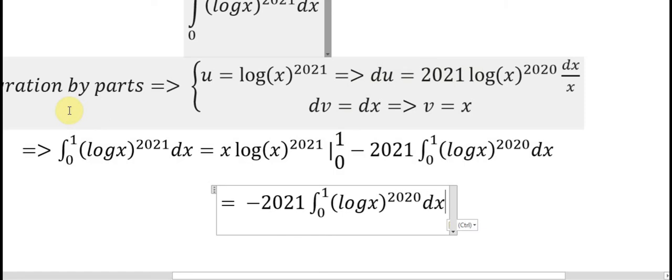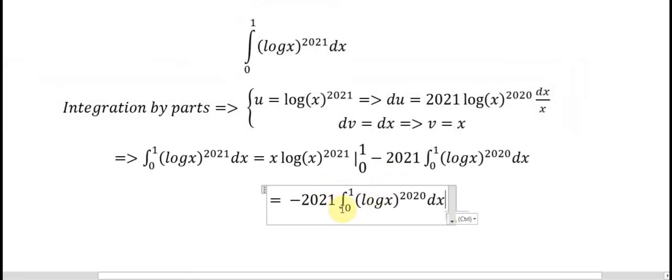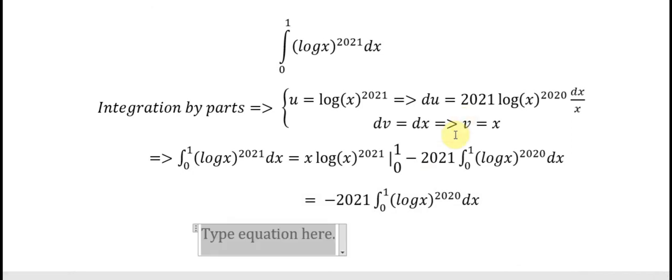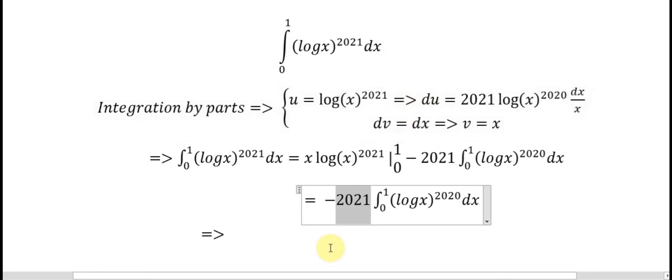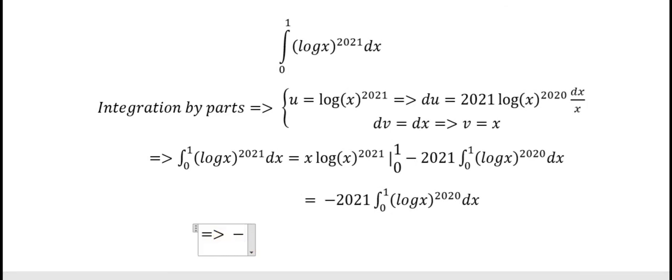And when we do integration by parts again, you will get 2020, and you will get negative again. So you will repeat this 2021 times. We have negative multiply negative, but this is an even number. There are 2020 times multiplied together giving positive, but we have this negative one, so we have a negative result. 2021 multiplied together many times, so we can conclude that we have negative 2021 factorial.